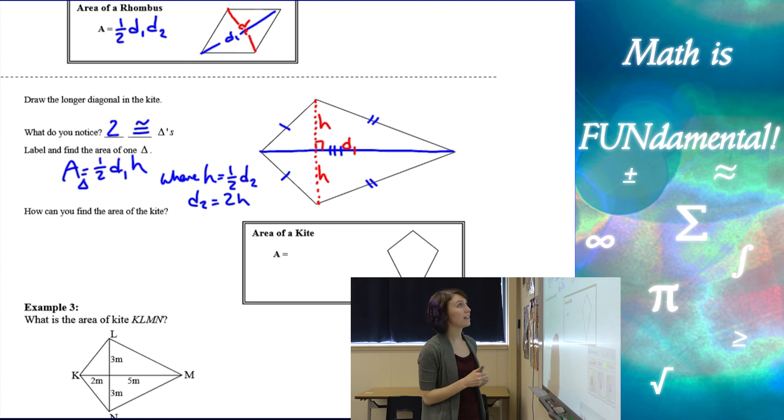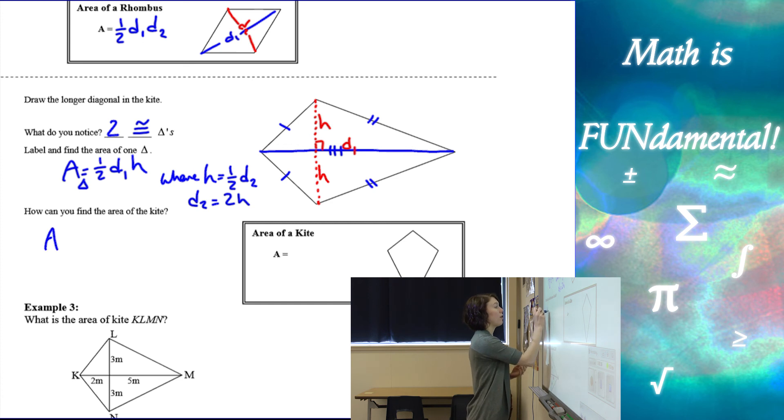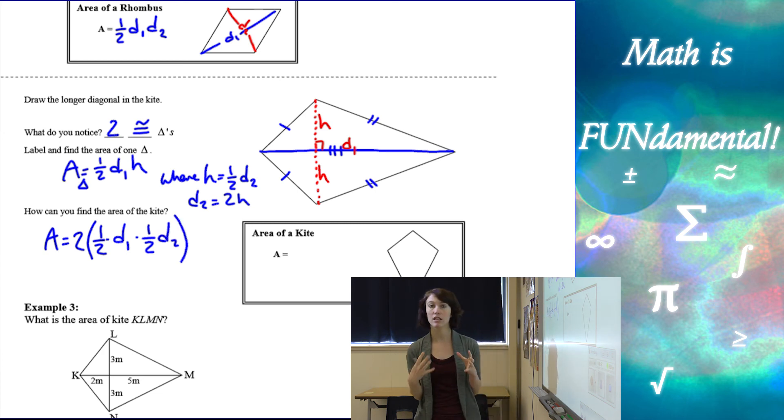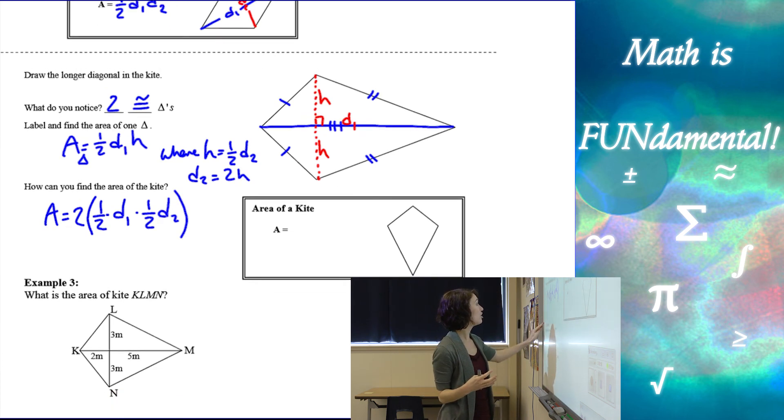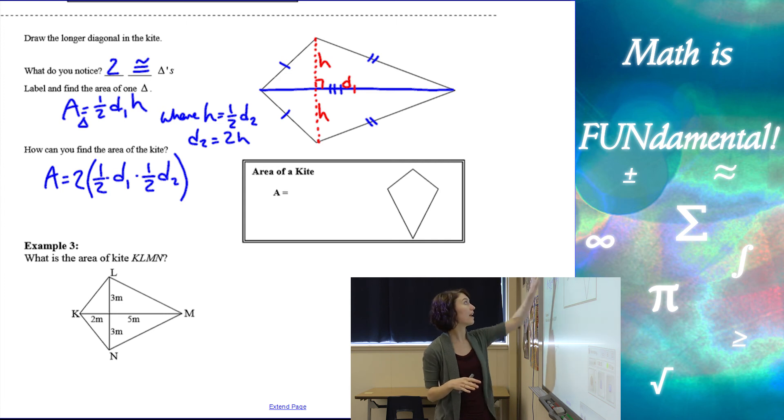So if we want to find the area of the whole kite, I can take the area of one triangle and double it. So the area would equal two times one half times D1 times, and then instead of H, I'm going to use this one half D2. So I'm going to put it all in relation to the diagonals. So my height was half of my second diagonal.